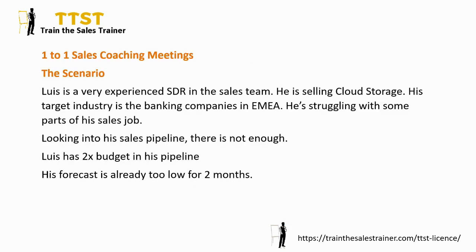The Scenario: Lewis is a very experienced SDR in the Sales Team. He's selling cloud storage. His target industry is banking companies in EMEA. He's struggling with some parts of his job. Looking into the Sales Pipeline, there is not enough — Lewis has two-times budget in his pipeline. Two-times budget means Lewis has to convert one in every two deals. If his target was five deals, he'd have to convert ten opportunities in his pipeline. Realistically, you'd want four-times or five-times budget. His forecast is already too low for two months. Please turn to page 28 of the Sales Coaching book for the GROW template or download it from the site.